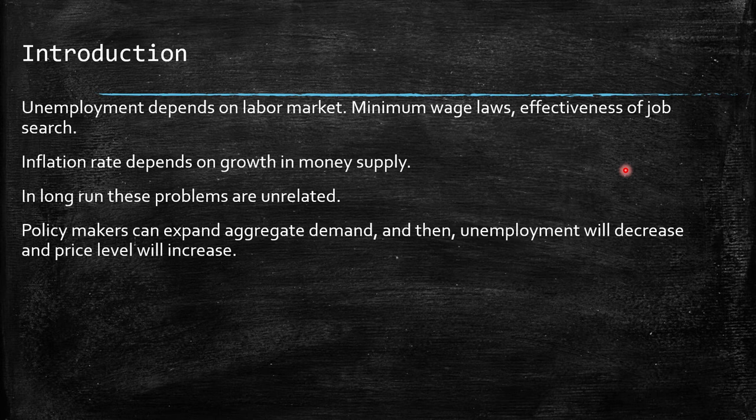We know that policymakers can expand aggregate demand. Who are the policymakers? We're talking about the government — fiscal policy — or the central bank — monetary policy. When they do this, unemployment will decrease and the price level will increase. So what we're going to look at here is that in the short run, unemployment and inflation are negatively correlated.